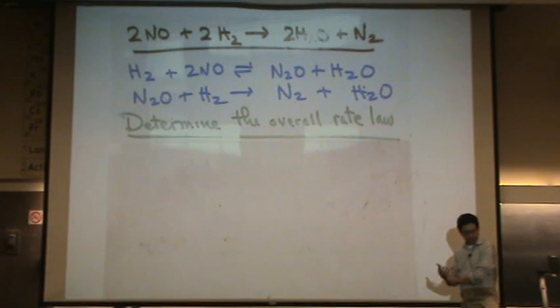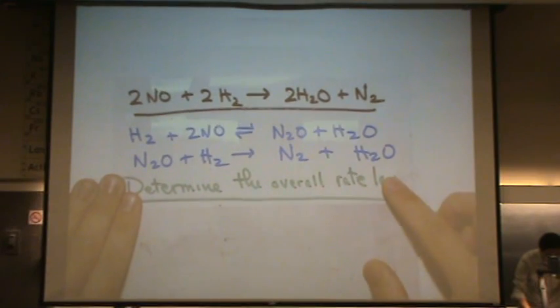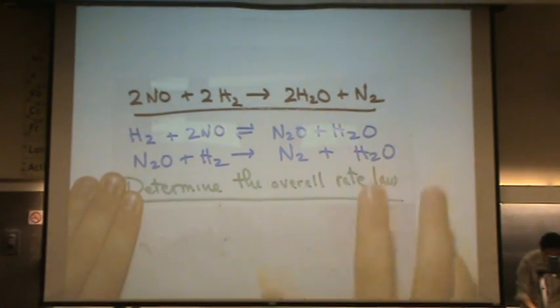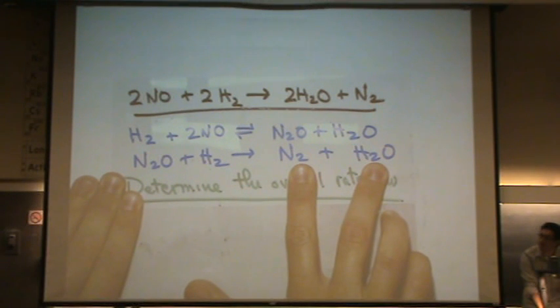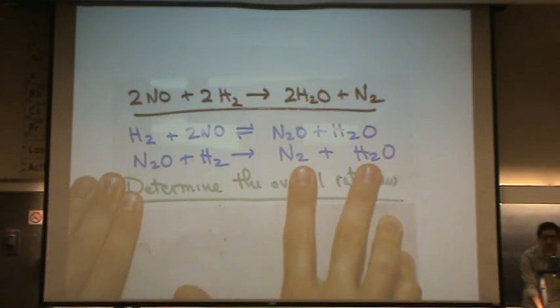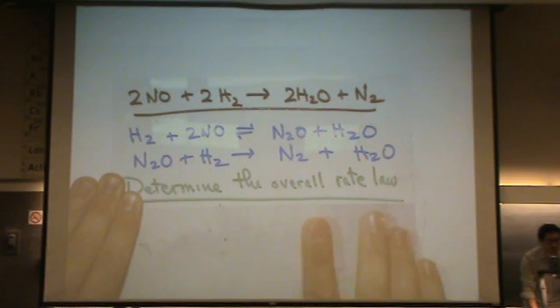What you'll do is say, well, where are the products actually made? And so in this case, the products of the overall reaction N2 and H2O are fully produced right here. See how both products are here? So my answer is going to be rate two. I'm going to be solving for rate two in this case because that's the one that produces the products.